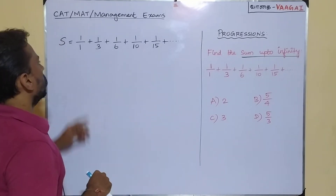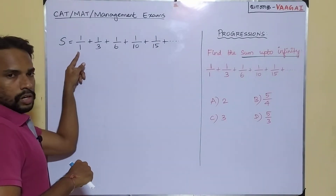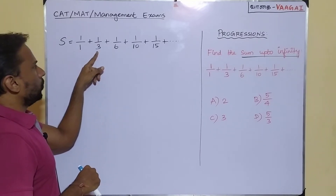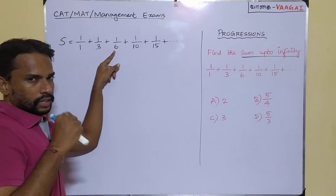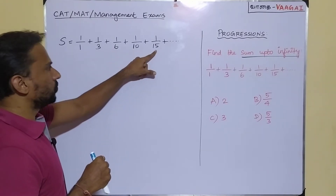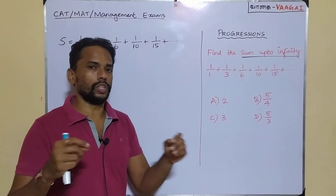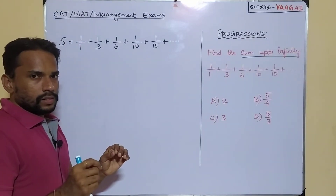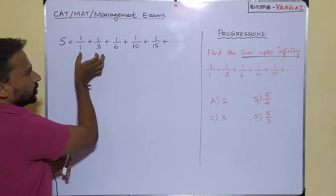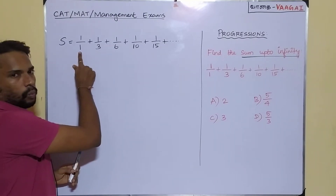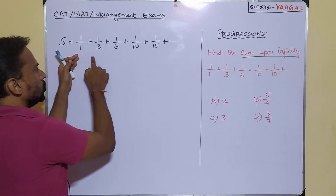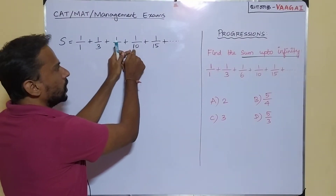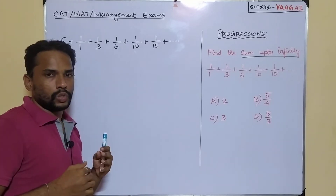The denominators are: 1st term → 1, 2nd term → 3, 3rd term → 6, 4th term → 10, 5th term → 15. Observing the pattern: 1, then 1+2=3, then 3+3=6, then 6+4=10, then 10+5=15.